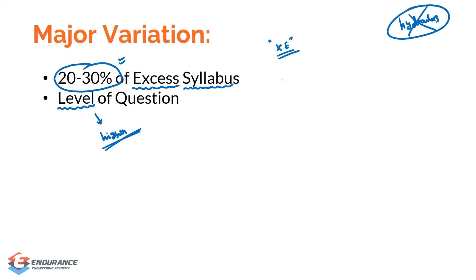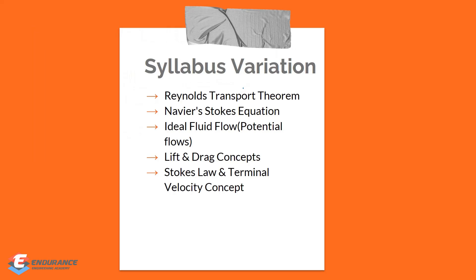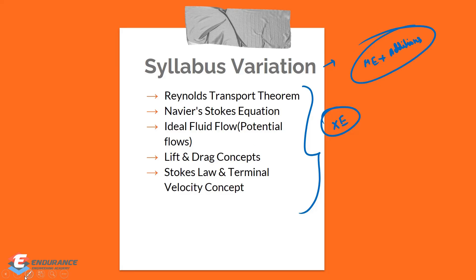These are the two major variations if you compare ME and XC. Now let's focus on the excess syllabus — what are the extra topics in XC? These are the topics you need to prepare in addition to what you prepare for ME. The first is Reynolds Transport Theorem (RTT), which is not required for ME. Second, the Navier-Stokes equation, also not required for ME. Third, ideal fluid flow — this is a very important chapter in XC but not present in ME. We can expect at least one two-mark question from this.